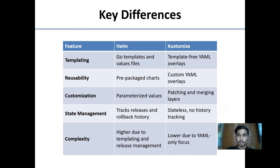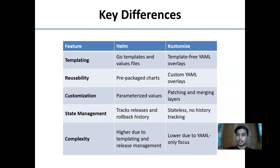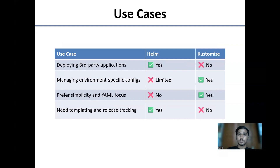Key differences: Templating — Helm uses Go templates and value files; Kustomize is template-free YAML overlays. Reusability — Helm uses pre-packaged charts; Kustomize uses custom YAML overlays. Customization — Helm uses parameterized values; Kustomize uses patching and merging layers. State management — Helm tracks releases and rollback history; Kustomize is stateless with no history tracking. Complexity — Helm is higher due to templating and release management; Kustomize is lower due to its YAML-only focus.